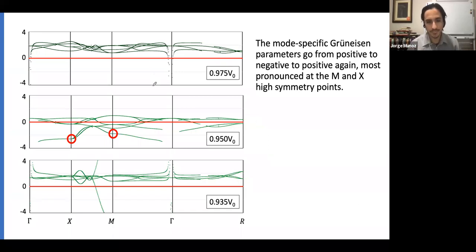We calculated the mode-specific Grüneisen parameter at different compressions: 0.975, which is the volume between the data points, 0.95, and 0.93. Over here we have some issues because they're getting very close to zero, and you shall not divide by zero.